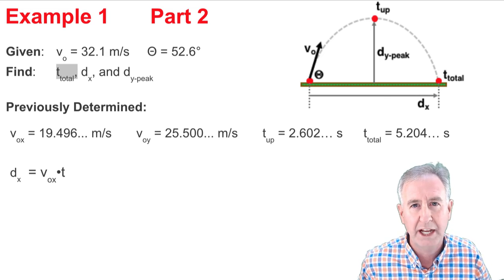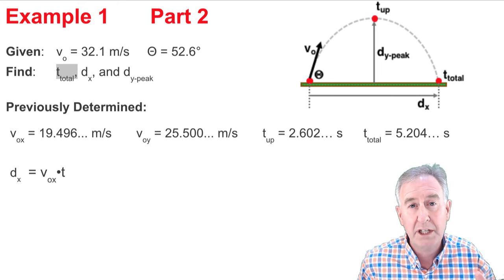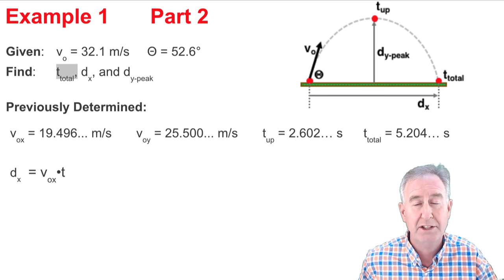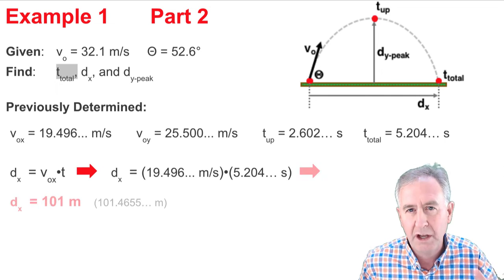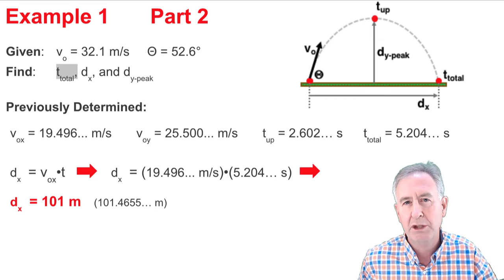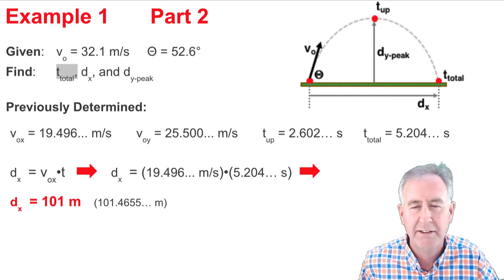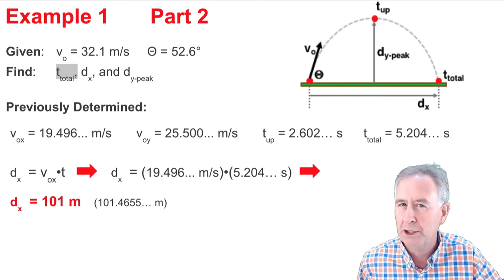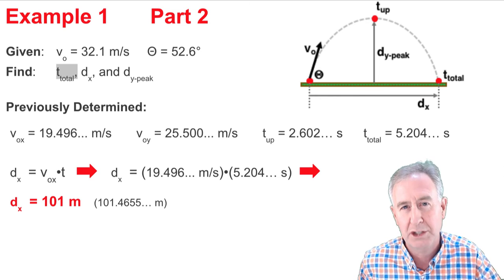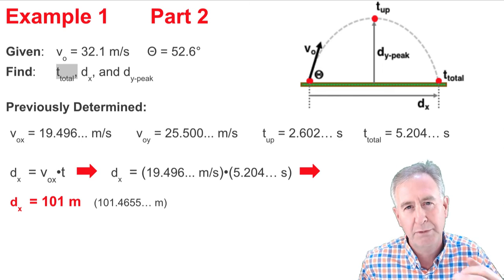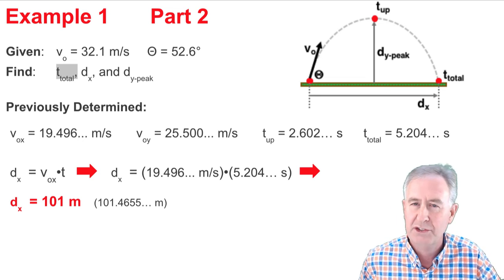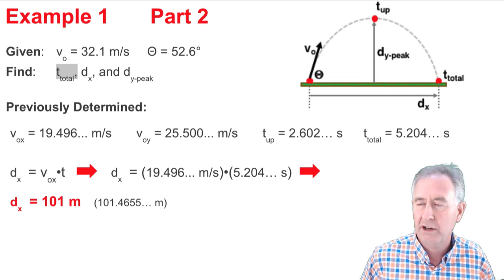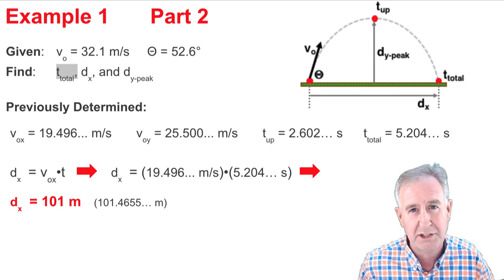It was 19.496. You see it listed here. Now I'm going to take that and multiply by the total time. That's the 5.204 seconds. Do it on your calculator. And when you're done, you get the answer. And it comes out to be 101.4655 and so on. And you don't need all 16 digits. There's rules for how many digits you include in your answer. If you're given three significant digits in the givens, that's how many you're going to put on your answer. So 101 meters suffices for me.